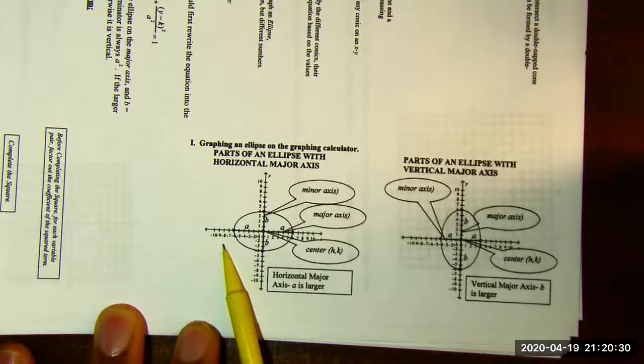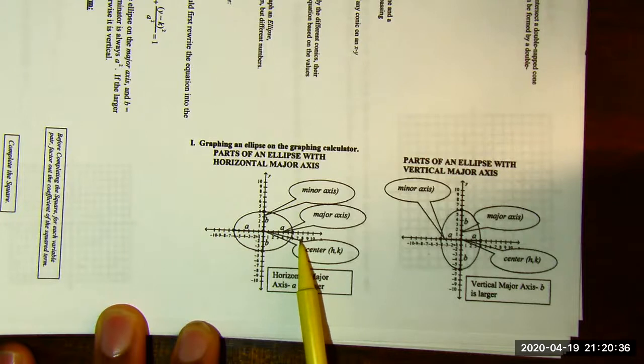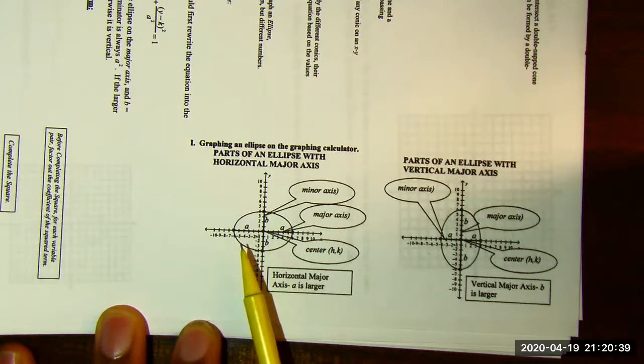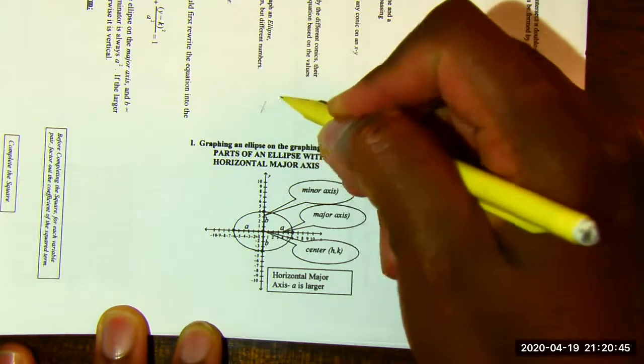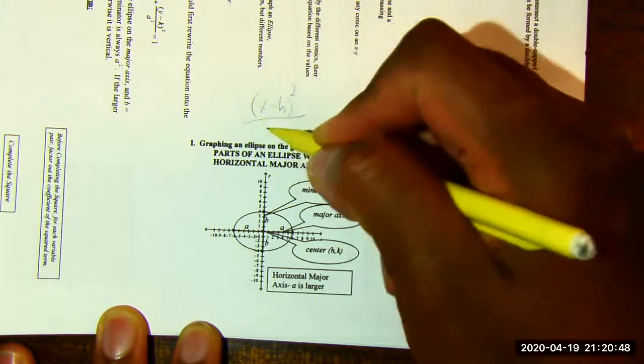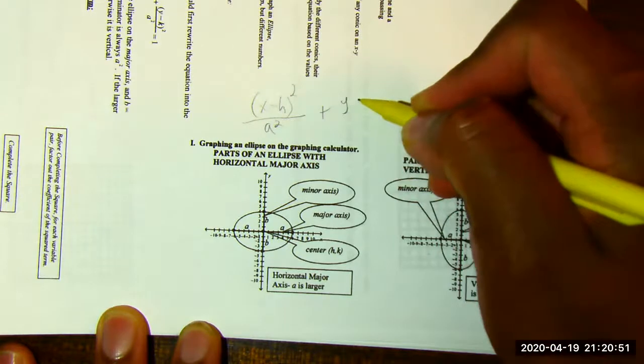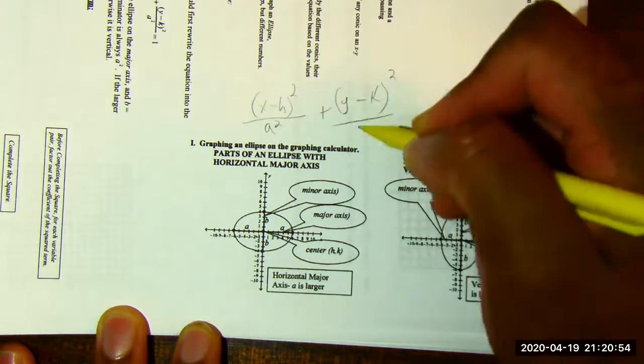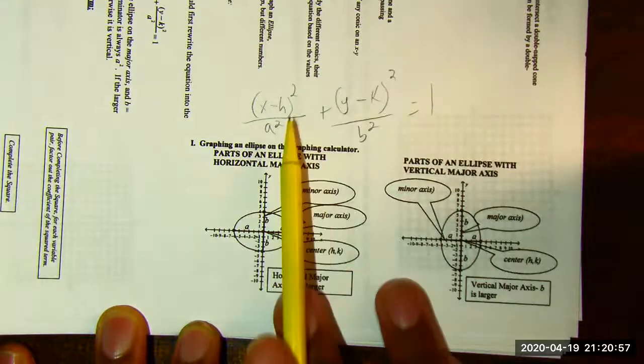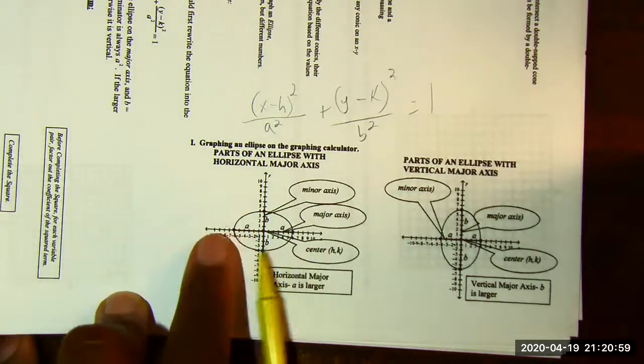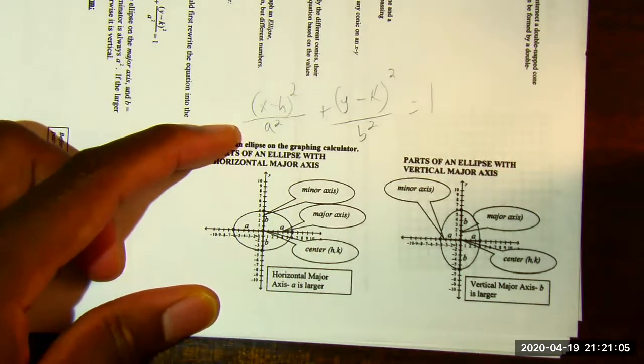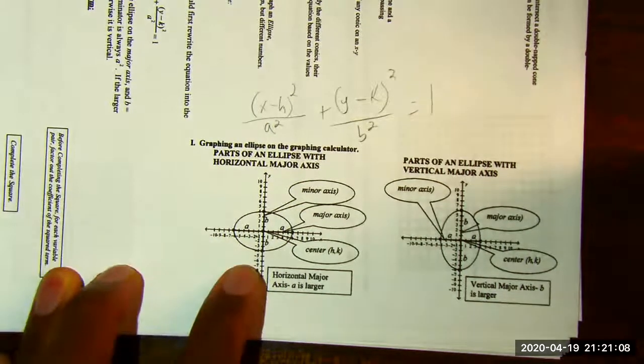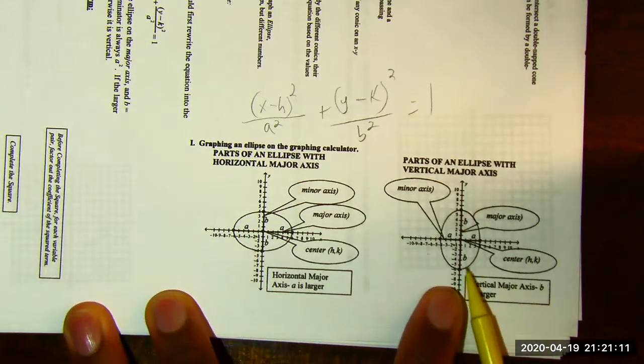An ellipse, horizontal major axis. Horizontal major axis, so that essentially means the x squared value is divided by a larger number than the y squared value. Based off the standard form of an ellipse, which I will jot down here, in this case, simply because it's aligned horizontally, the x value has to be divided by the largest value, the y value by the smallest value. In this case, the y value is divided by the largest value because it's aligned vertically.